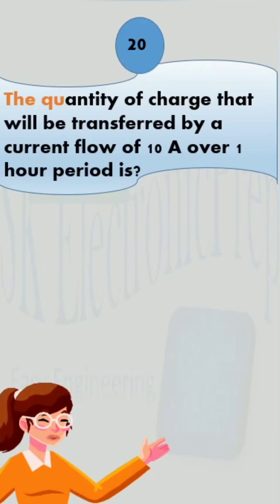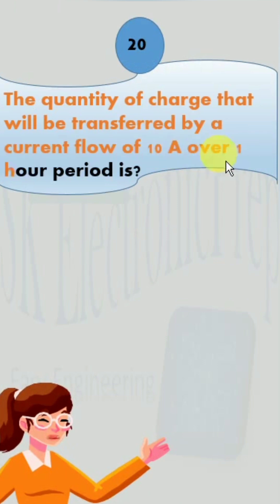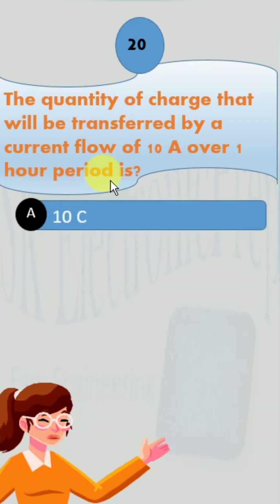The quantity of charge that will be transferred by a current flow of 10 ampere over 1 hour period is: option A, 10 coulomb; option B, 3.6 × 10^4 coulomb;